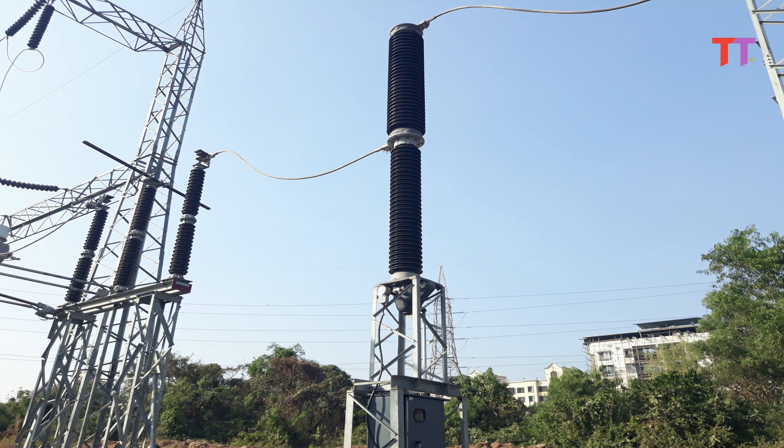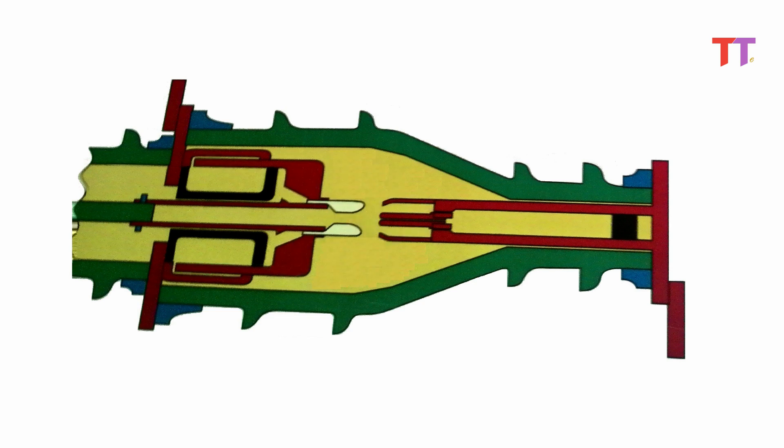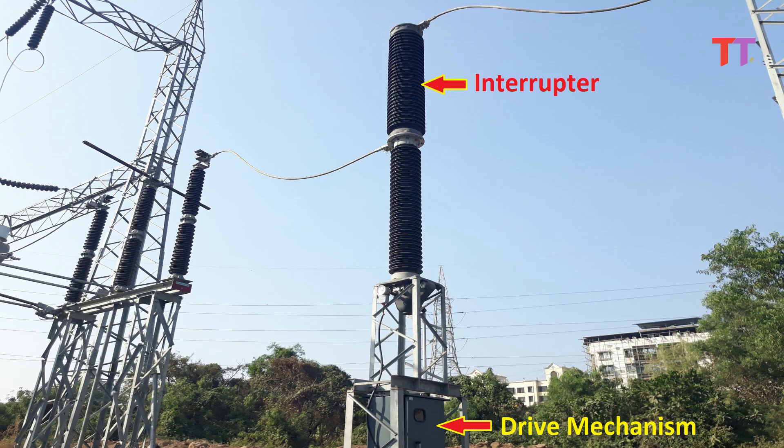As we know any circuit breaker has two main components. One interrupter where close and open operation of contacts takes place. Two drive mechanism. First let's see what is inside this interrupter.